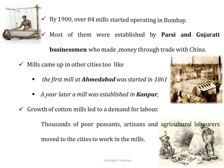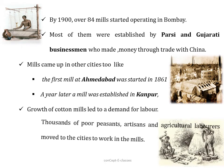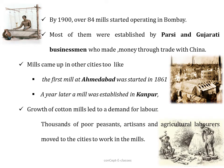By 1900, over 84 mills were operating in Bombay, and most of them were established by Parsi and Gujarati businessmen who had made money through trade with China. Mills also came up in other cities — the first mill in Ahmedabad was started in 1861, and a year later a mill was established in Kanpur. The growth of cotton mills led to demands for labour, and thousands of poor peasants, artisans, and agricultural labourers moved to cities to work in them.